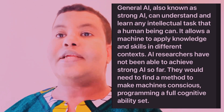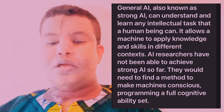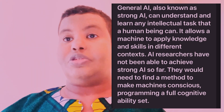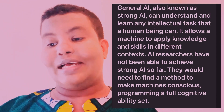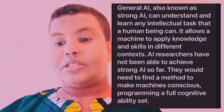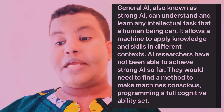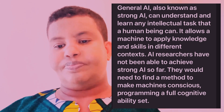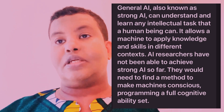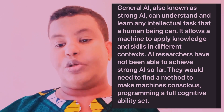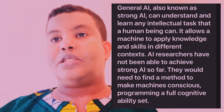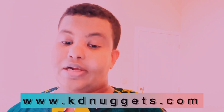Now we are going to look at the Simply Learn website for the definition of artificial general intelligence. General artificial intelligence, also known as strong artificial intelligence, can understand and learn any intellectual task that a human being can. It allows a machine to apply knowledge and skills in different contexts. AI researchers have not been able to achieve strong artificial intelligence so far — they would need to find a method to make machines conscious, programming a full cognitive ability set.